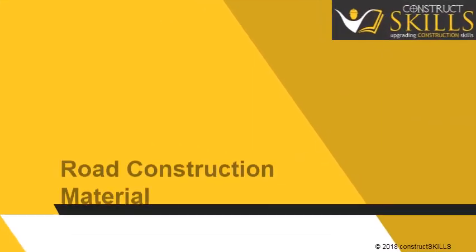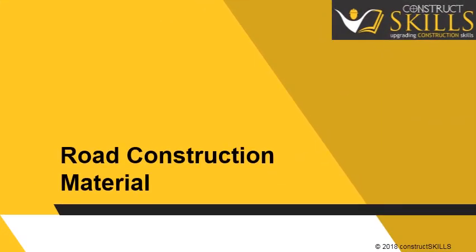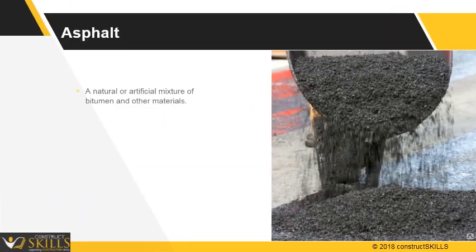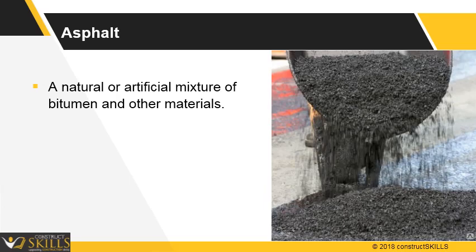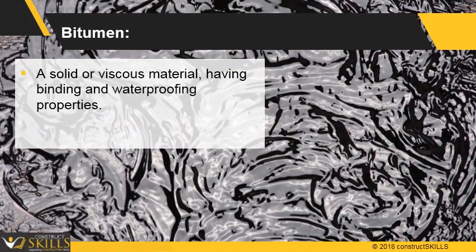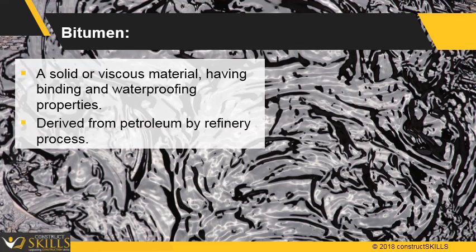We will be discussing various materials used for road construction. Asphalt: a natural mixture of bitumen. Bitumen: a solid or viscous material having binding and waterproofing properties, derived from petroleum by a refinery process.